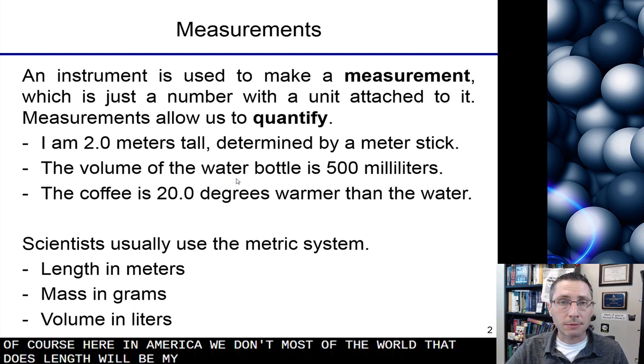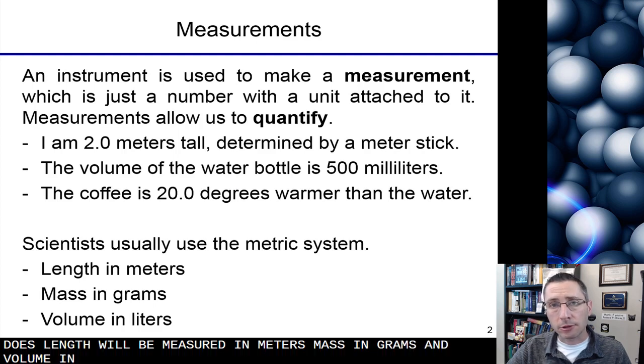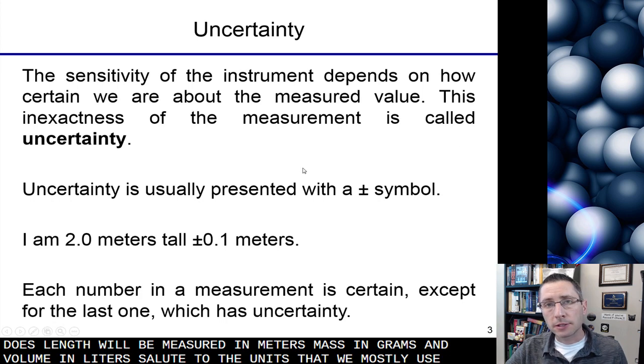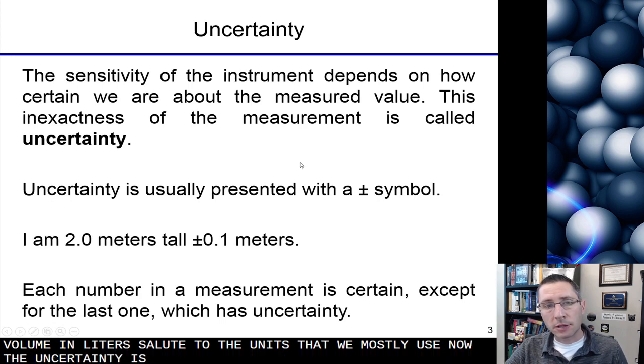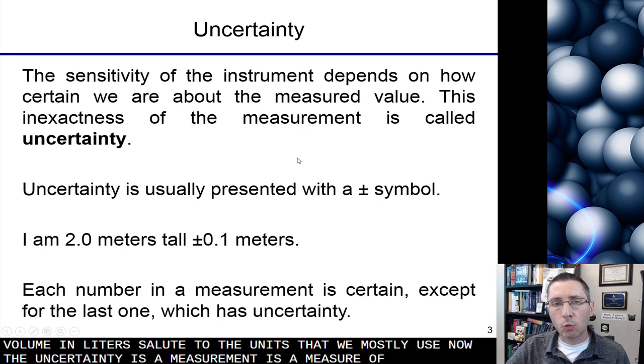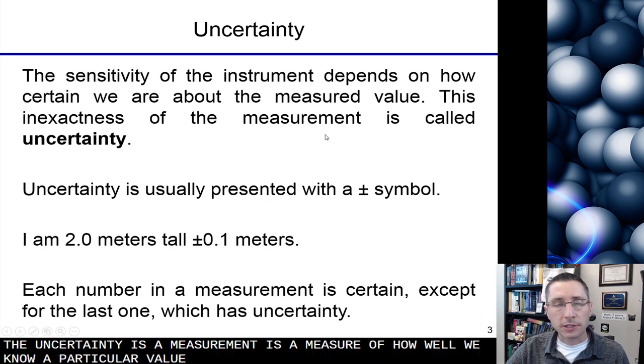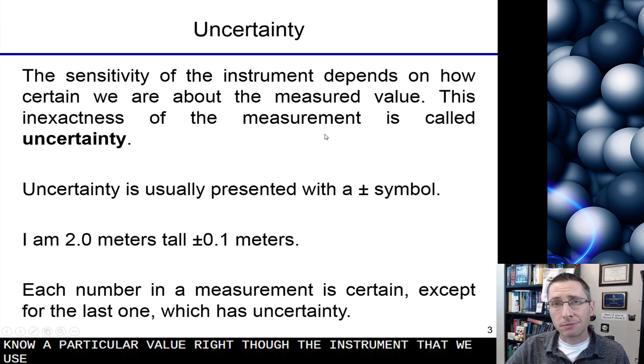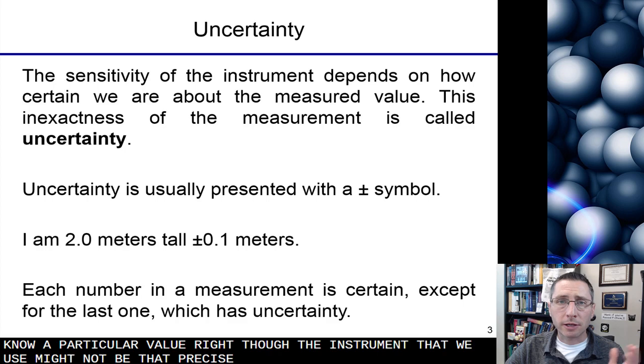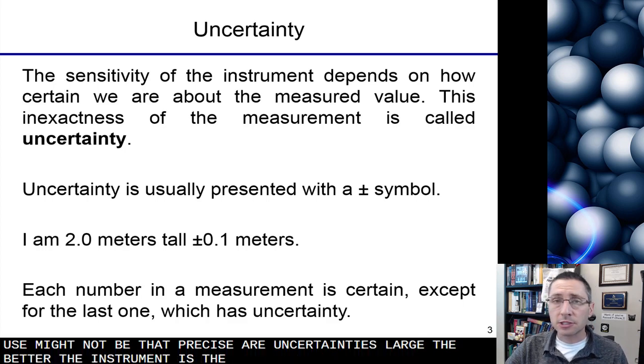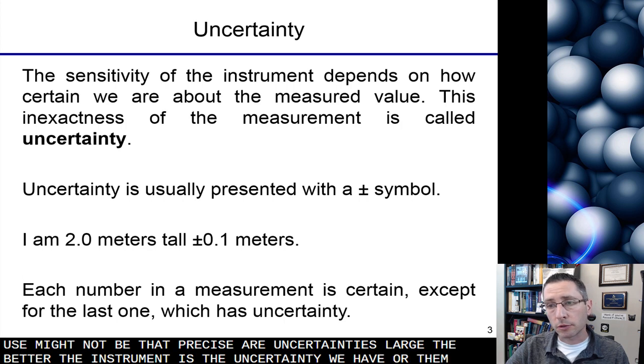Length will be measured in meters, mass in grams, and volume in liters. So those are the units that we mostly use. Now the uncertainty is a measure of how well we know a particular value. So the instrument that we use might not be that precise, so our uncertainty is large. The better the instrument is, the less uncertainty we have, or the more certain we are.